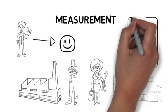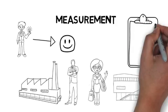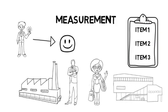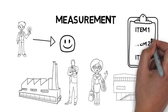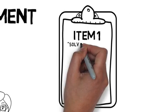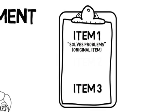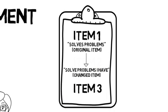Low transparency regarding how the previously validated scale was amended by, for example, omitting or adding items to the scale, or by changing the wording of items to fit the context, say from solves problems to solve problems I have, changes the scale's properties and reduces the ability of others to obtain the same results and reach similar conclusions.